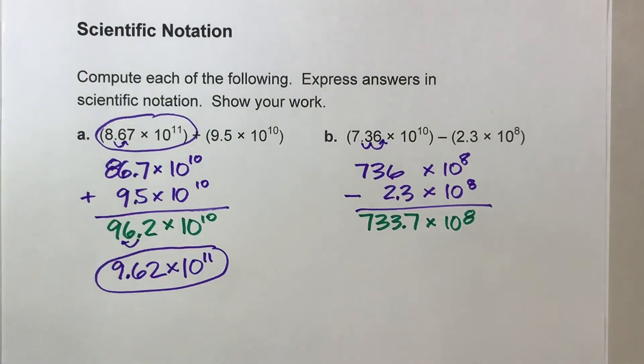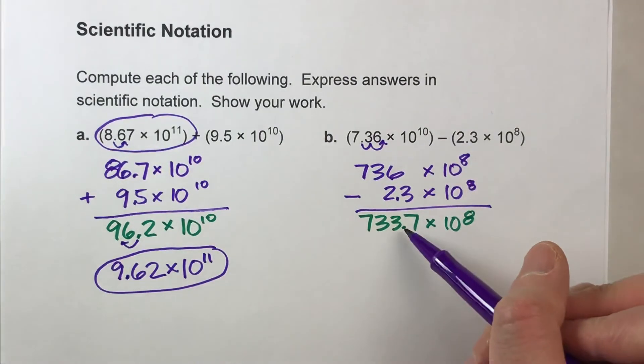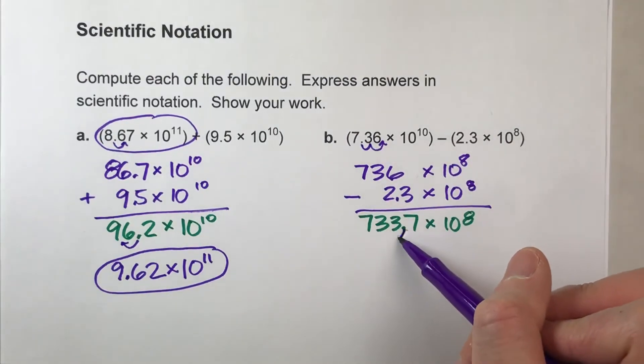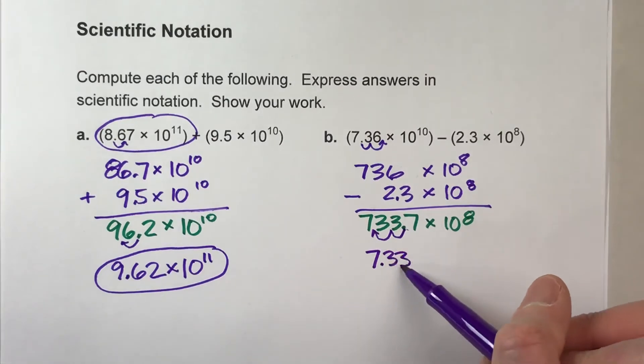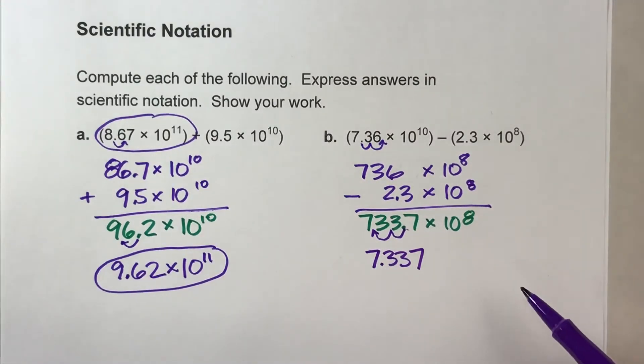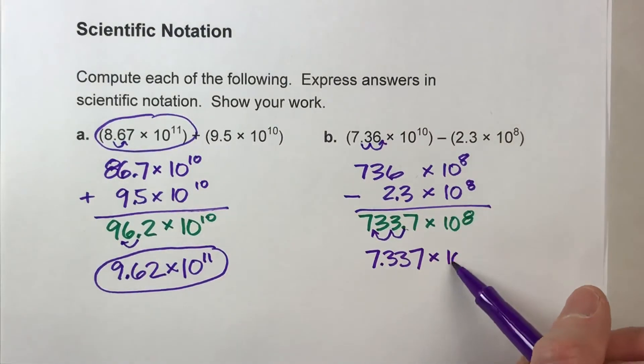One last step, it's non-scientific notation, so I'm going to have to adjust it back to scientific notation. So I'm going to have to move the decimal two places this time to make it a number between 1 and 10. So it's 7.337 times 10.